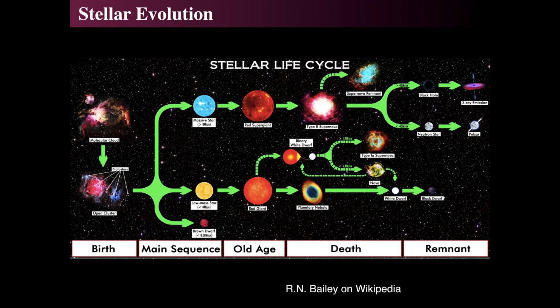This is a schematic that I grabbed off of Wikipedia by R.N. Bailey. It's a really good schematic that shows the life cycle of stars from various points. We see stars, no matter what they are, start off as a great big molecular cloud. They get born in really big star clusters. The star clusters then have protostars in them, and the protostars then become either small mass stars, low mass stars, or really massive stars.